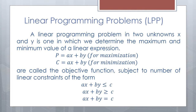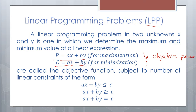A linear programming problem (LPP) in two unknowns X and Y is one in which we determine the maximum and minimum of a linear expression. For a minimization problem, we use C = AX + BY. For a maximization problem, we use P = AX + BY. Subject to a number of linear constraints of the form: AX + BY ≤ C, AX + BY ≥ C, or AX + BY = C. These are our linear constraints, along with non-negativity constraints X ≥ 0 and Y ≥ 0.